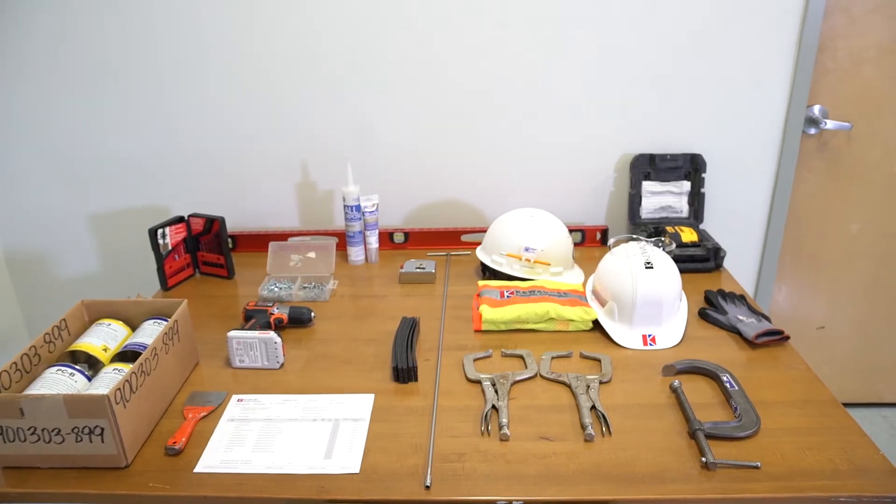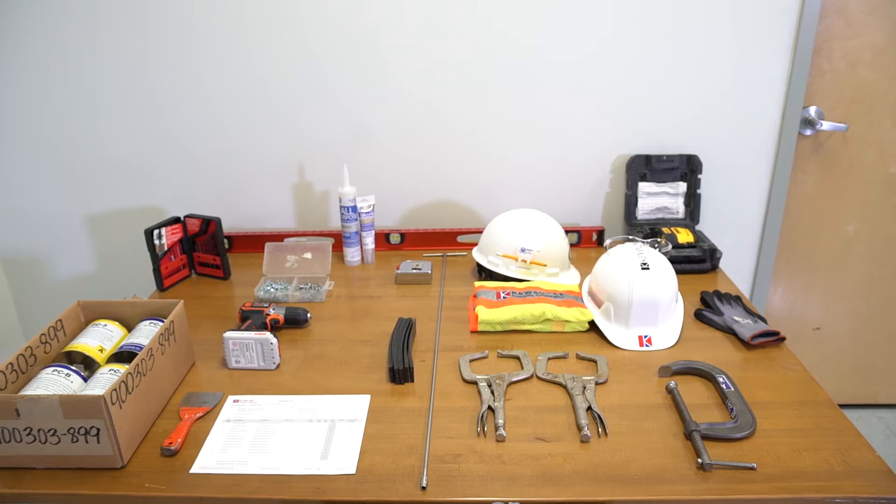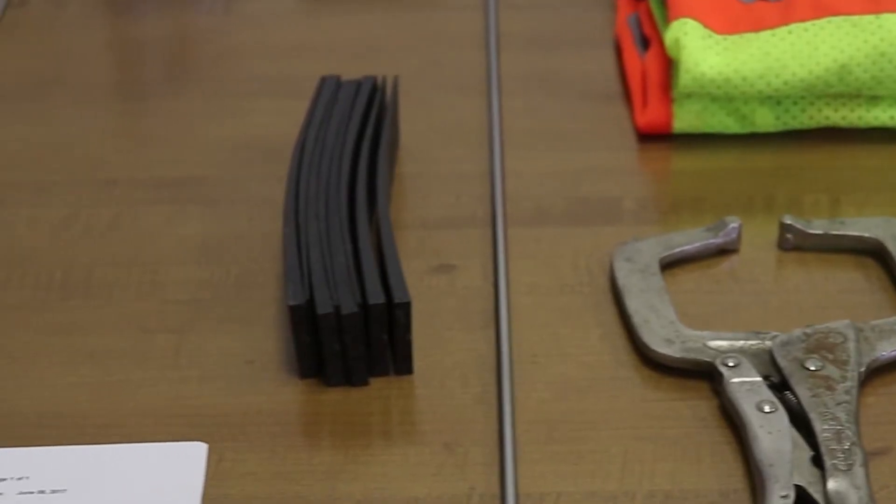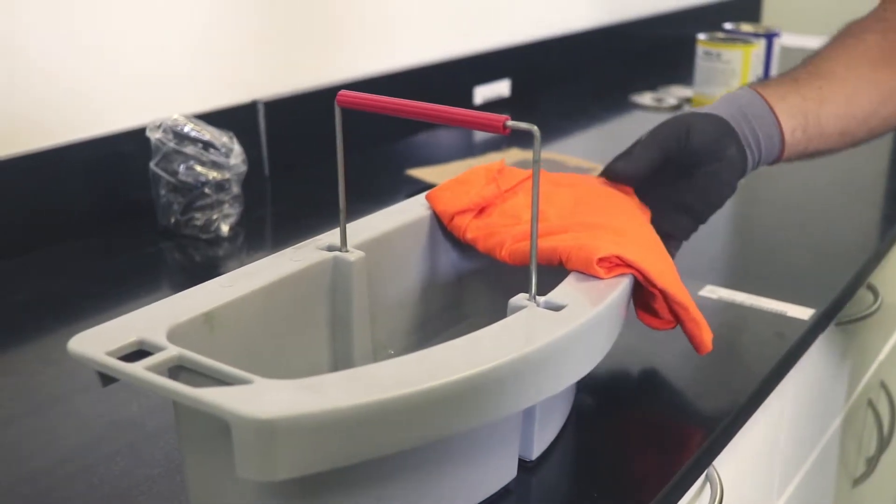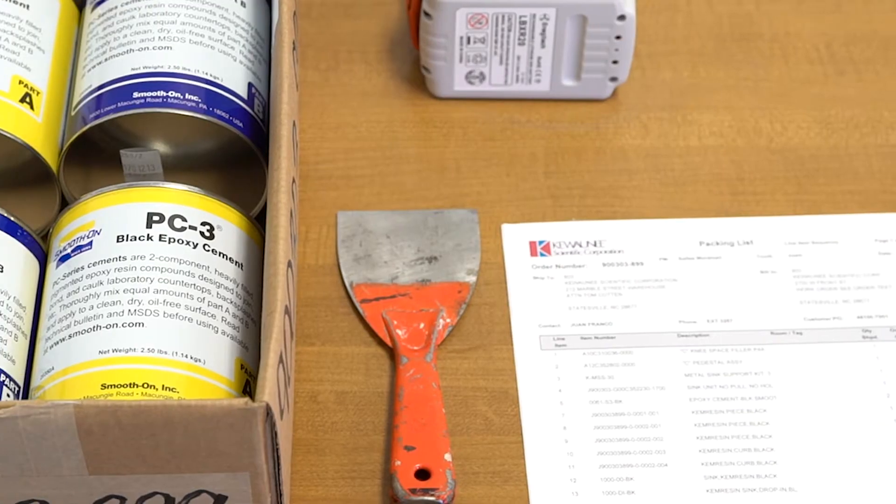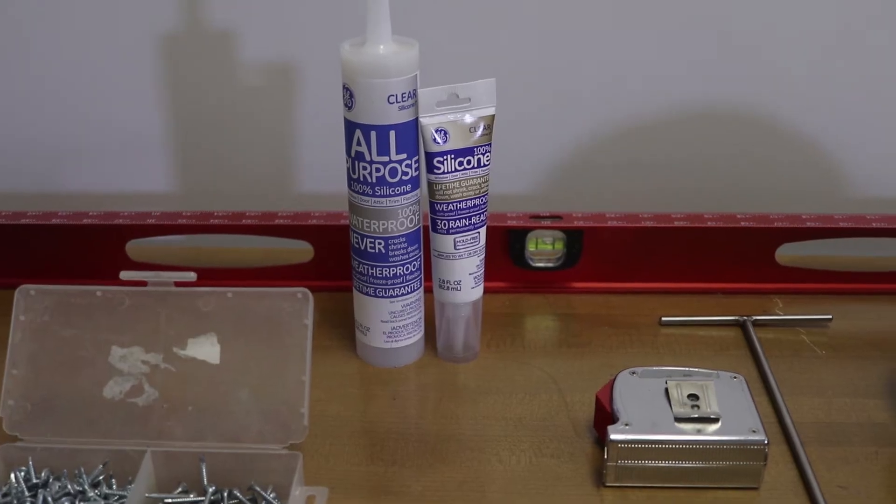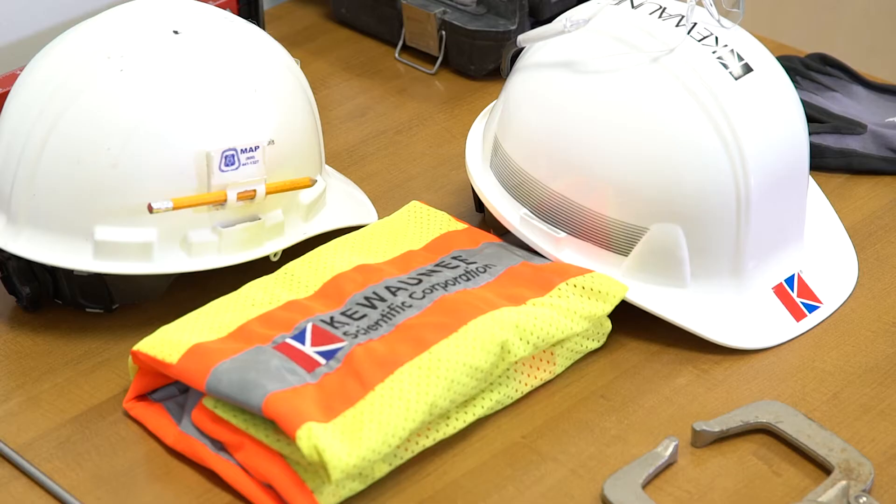To install backsplashes, you will need the following tools and hardware. We recommend a carpenter's level, leveling shims, two buckets with water and cloths, putty knives, two-part epoxy cement, tubes of silicone, and proper safety equipment.